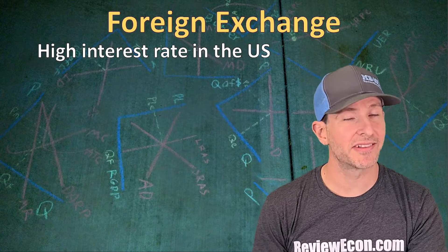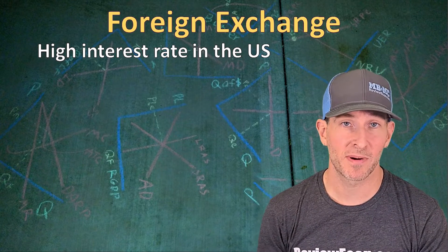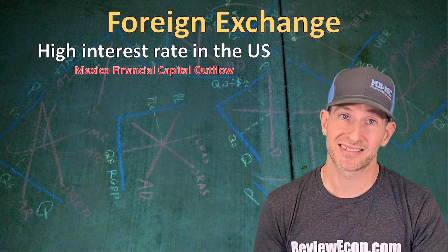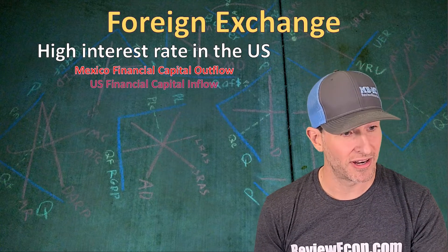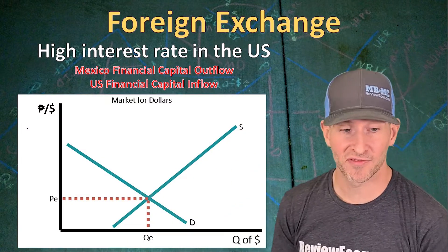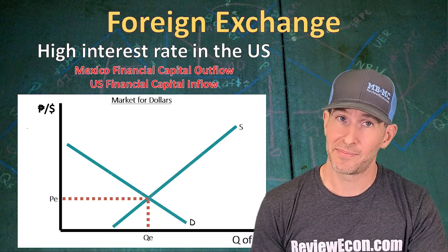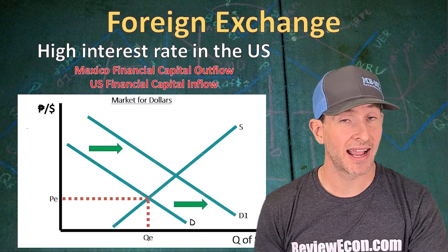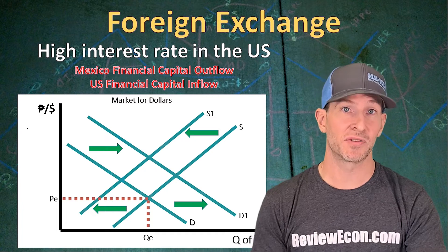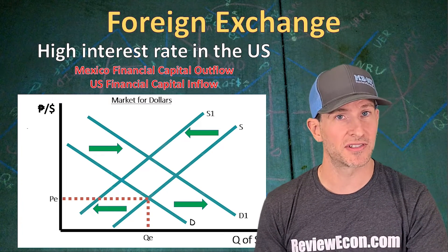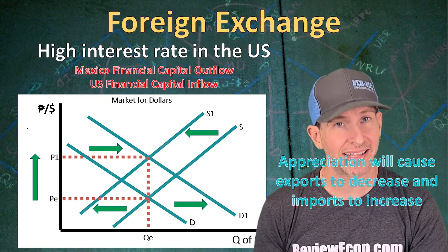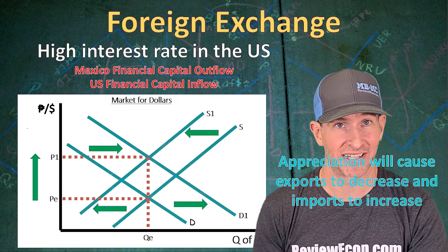If on the other hand we saw an increase in the interest rate in the United States — perhaps from contractionary monetary policy decreasing the money supply — that would cause a financial capital outflow from Mexico as foreign investors seek higher interest rates in the United States. For the US, we would see a net financial capital inflow. On the foreign exchange market for the US dollar, foreign investors seeking those high interest rates will demand higher quantities of US dollars, while foreign investors with US dollars will be less likely to sell them, decreasing the supply. Both shifts cause the US dollar to appreciate, which causes exports in the United States to decrease and imports to increase.